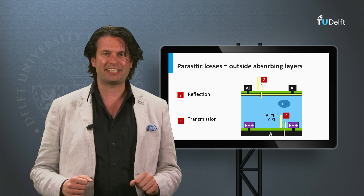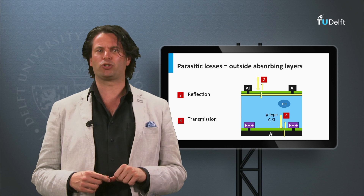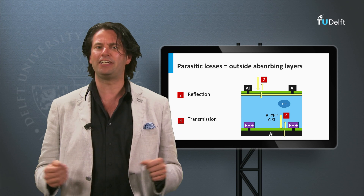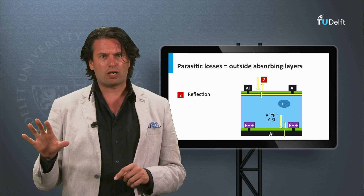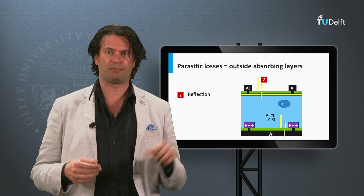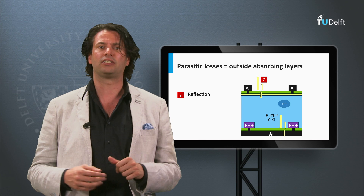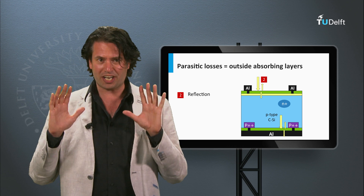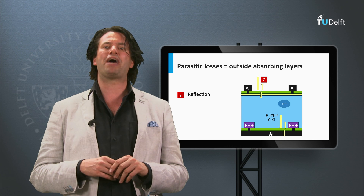How to reduce the reflection at the front surface of a solar cell and how to increase the light trapping in the absorber layers. I will discuss some general concepts which will come back in many PV technologies, which we will be discussing the next two weeks. In the previous lecture we discussed the optical loss mechanism due to reflection at the front interfaces of a solar cell. As all types of solar cells suffer from this loss mechanism, I will discuss first some anti-reflection concepts.